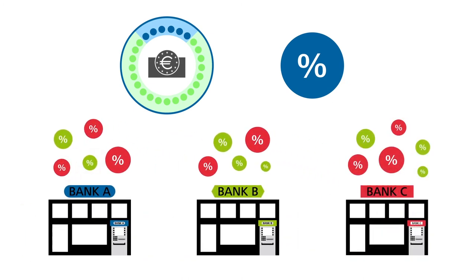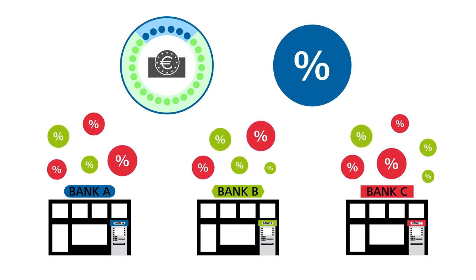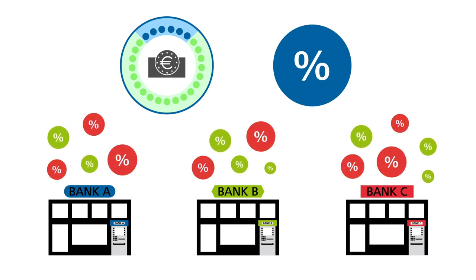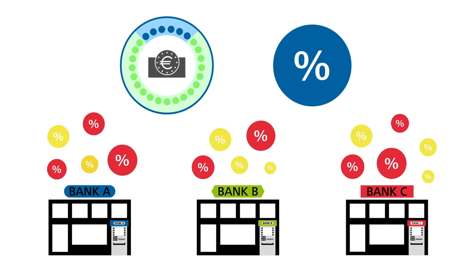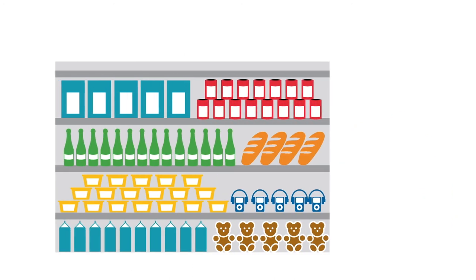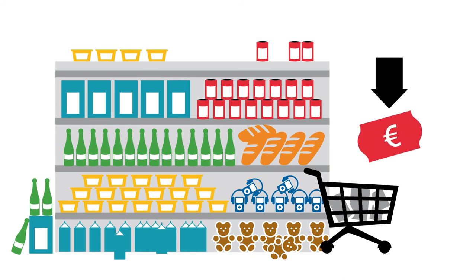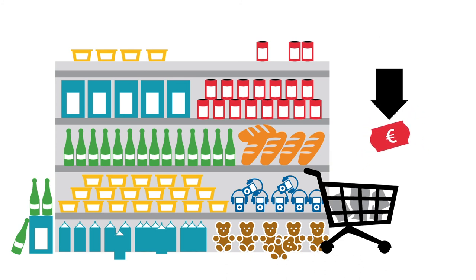When the central bank raises the key rate, commercial banks respond by raising the interest rates for their customers. This pushes up the cost of loans for customers and makes saving more rewarding. As a result, the level of demand in the economy tends to go down, thus dampening inflation.